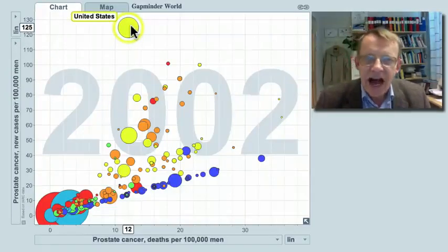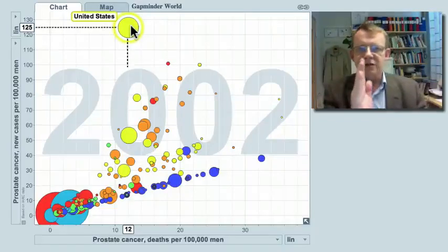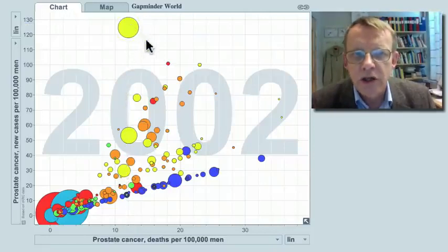United States has a very high risk of getting the diagnosis for prostate cancer, whereas the risk of dying is not so high. And this is what supports the hypothesis that there is some overdiagnosis.